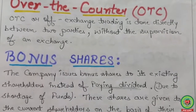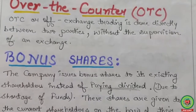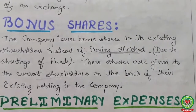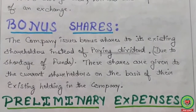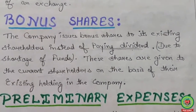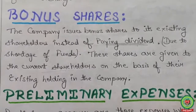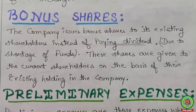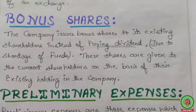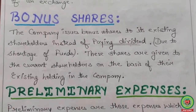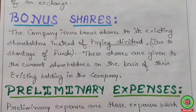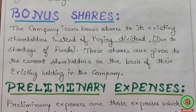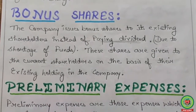The next term is bonus shares. A company issues bonus shares to its existing shareholders instead of paying dividends. Due to a shortage of funds, these shares are given to current shareholders on the basis of their existing holding in the company. The company first checks out each shareholder's existing shareholding, then provides bonus shares in that particular proportion.